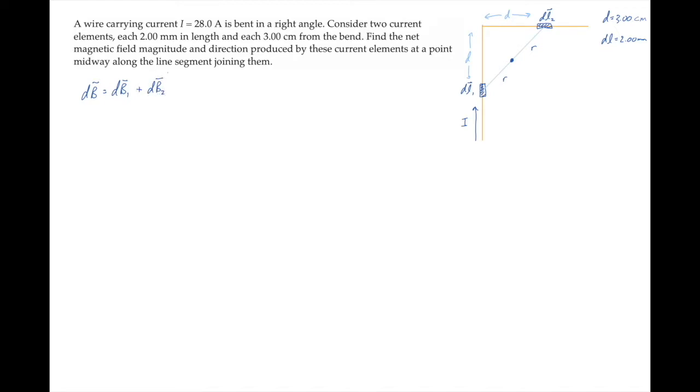Each of those magnetic fields are given by the Biot-Savart law. I'll write that here. In this expression, the vector r hat is the unit vector from each current element toward the field point. So r hat 1 looks like this, and r hat 2 looks like this.